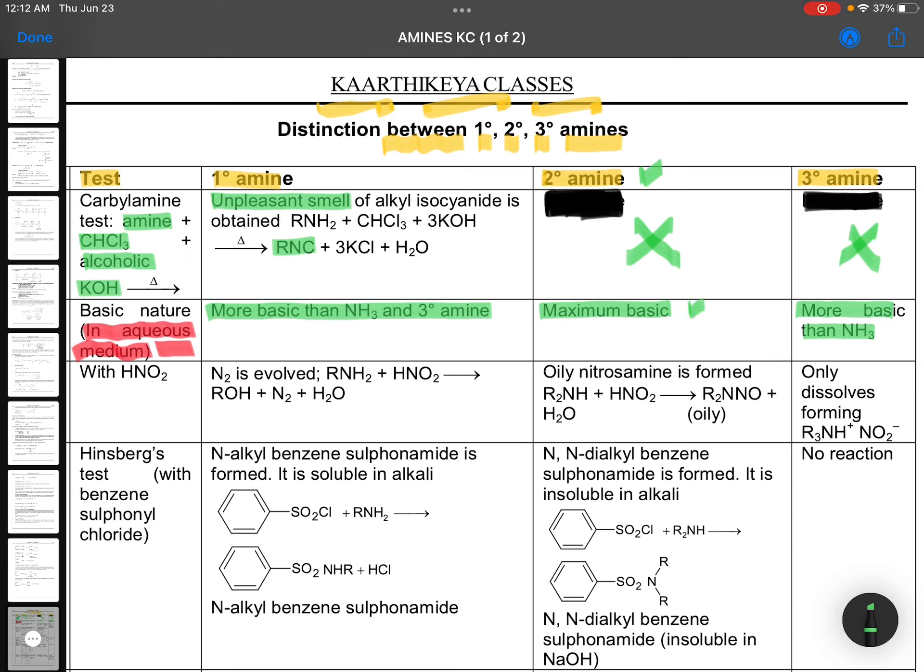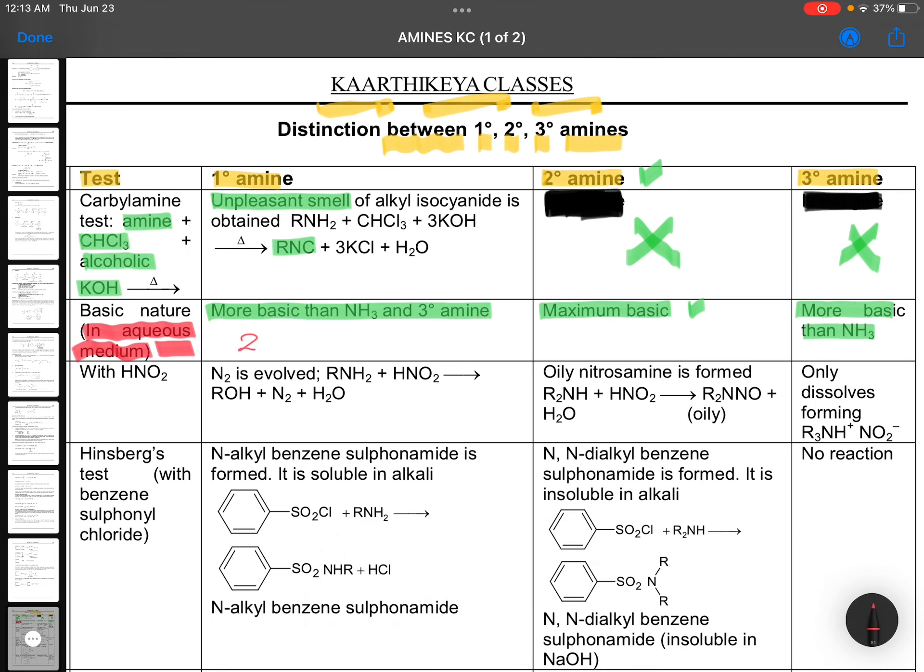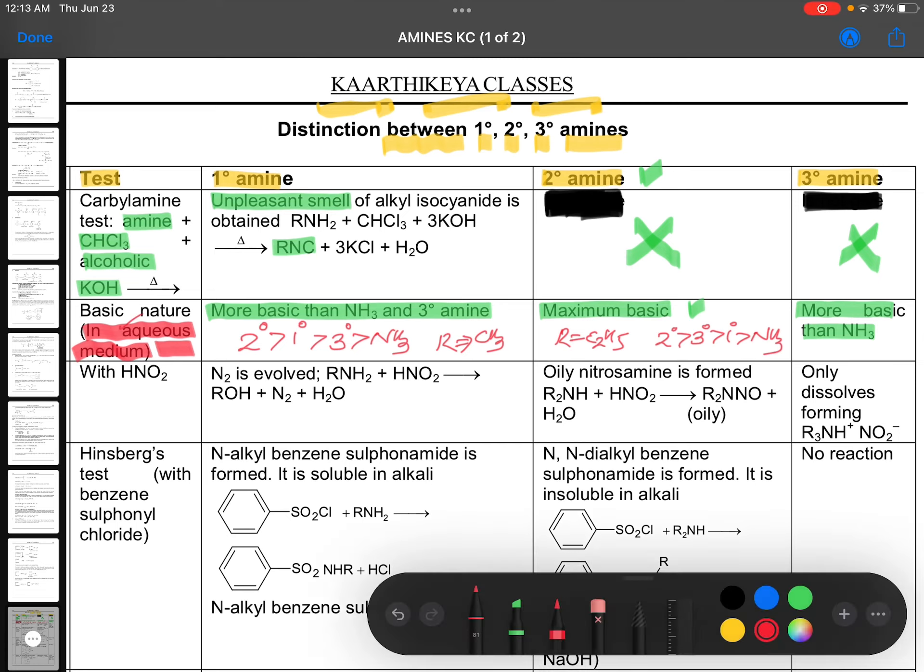Then primary can come, tertiary can come. Primary comes if it is methyl group. Second, tertiary will come if it is ethyl or higher groups. So the order will be very simple. Secondary is best followed by primary, tertiary and ammonia for R equals methyl groups. If R equals ethyl or higher groups are there, propyl-like groups: secondary, tertiary, primary and ammonia. So this is one important point you can say.